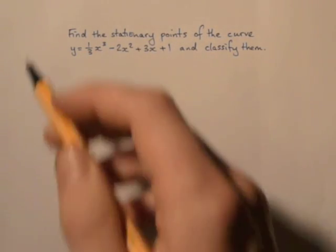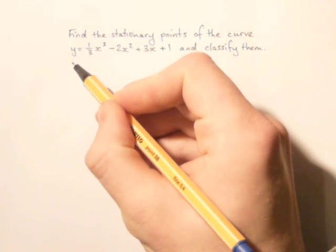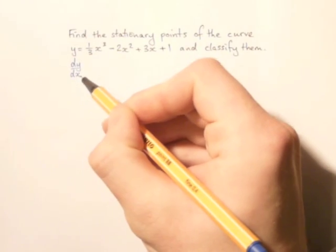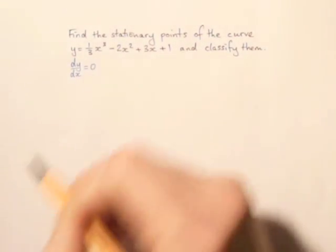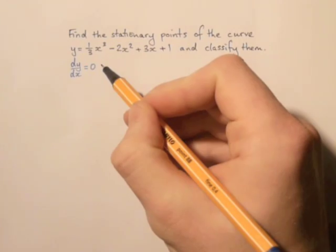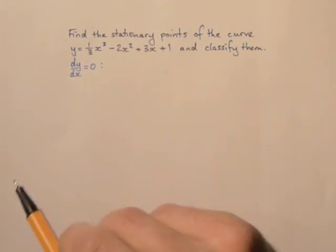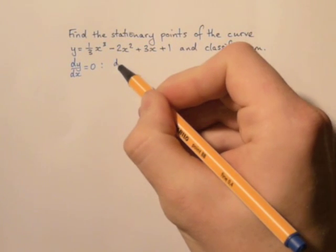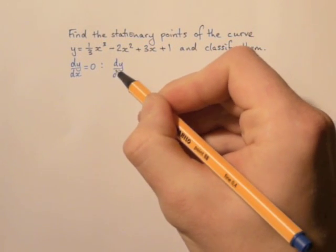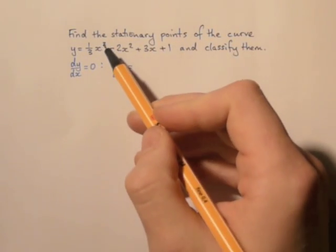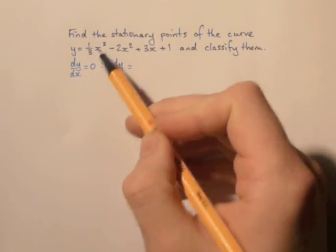Stationary points are exactly where the gradient is zero, so we can say that dy dx is equal to zero. So we need to find dy dx. I bring down the power and reduce the power by one.